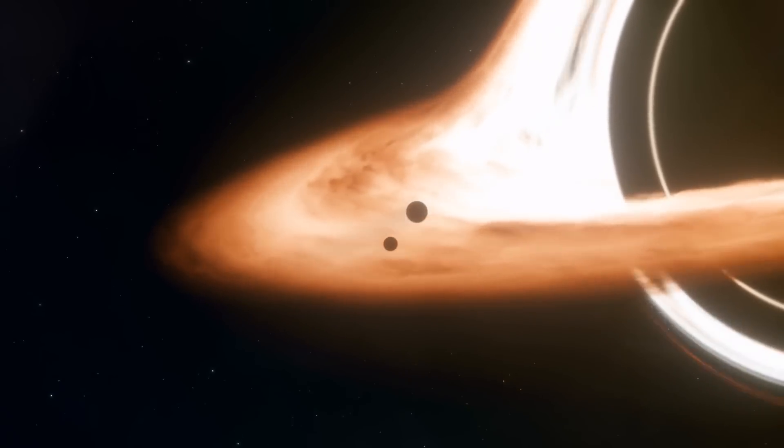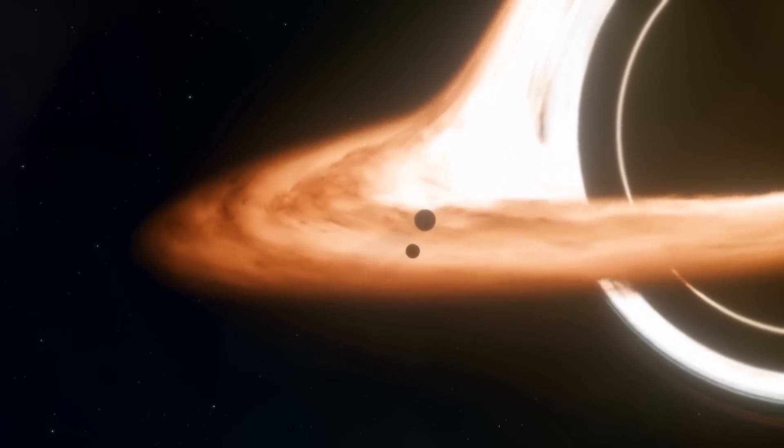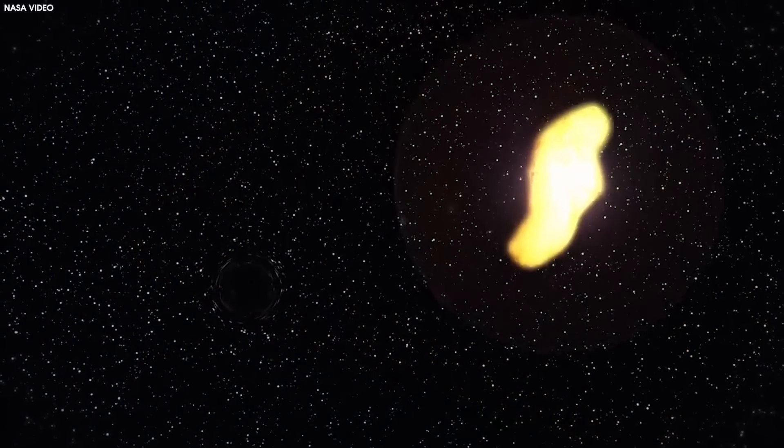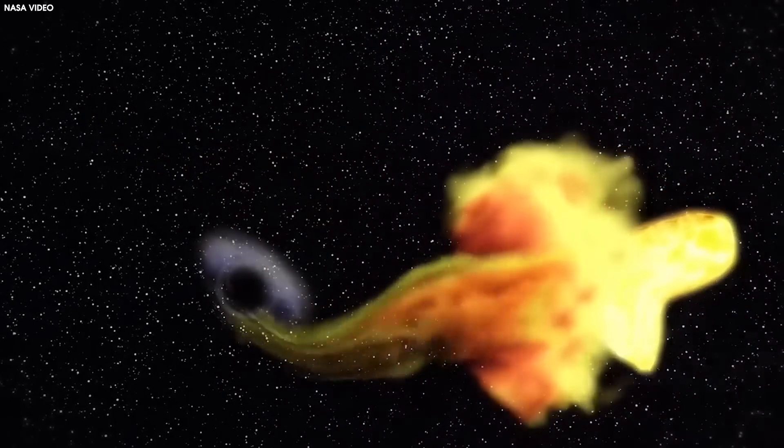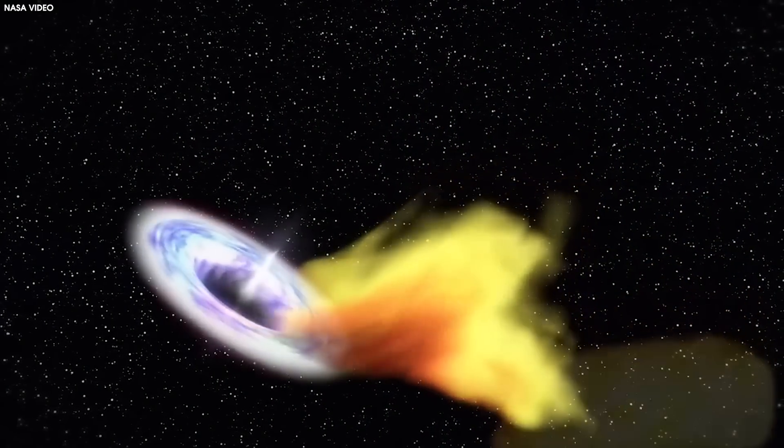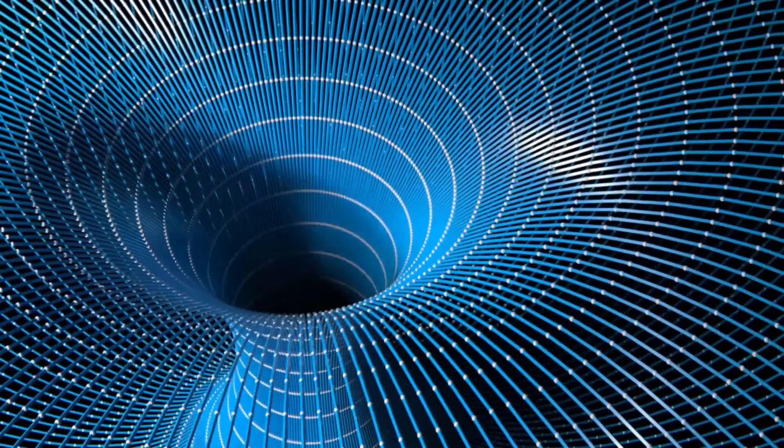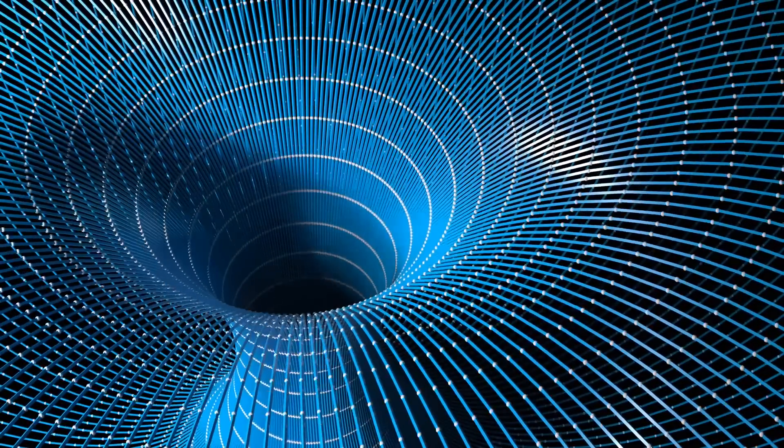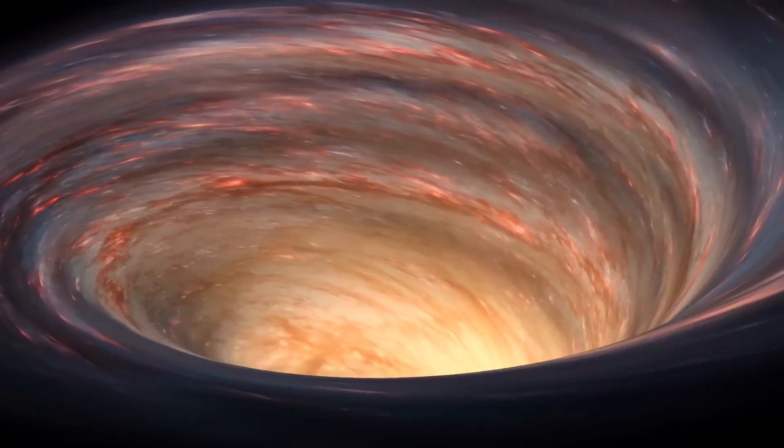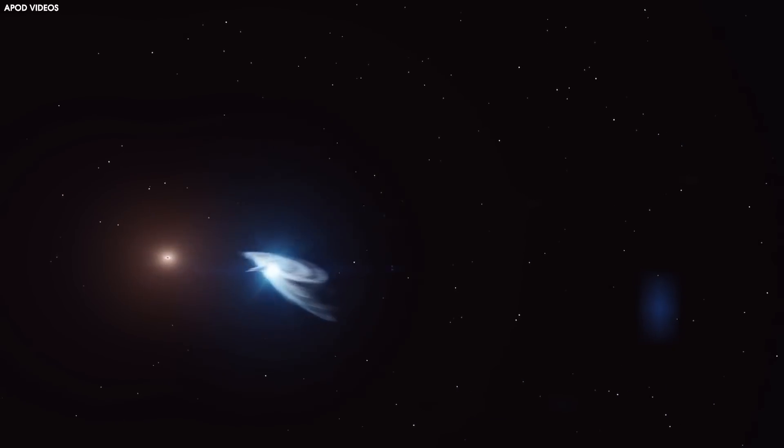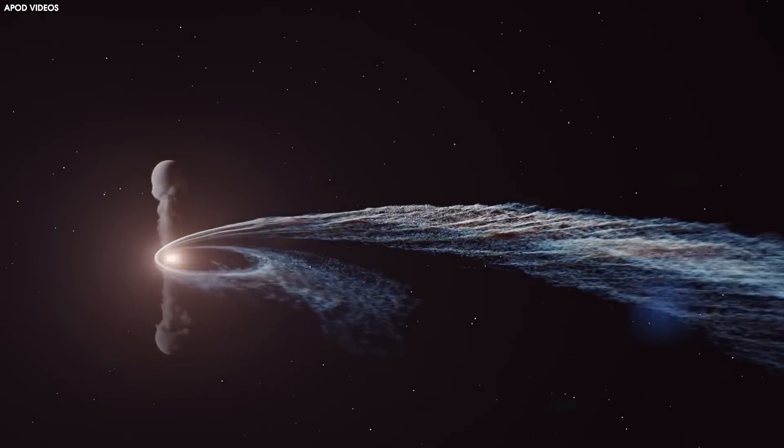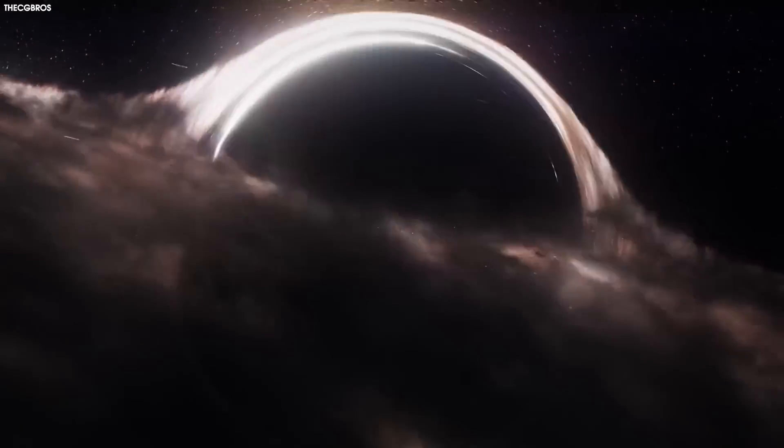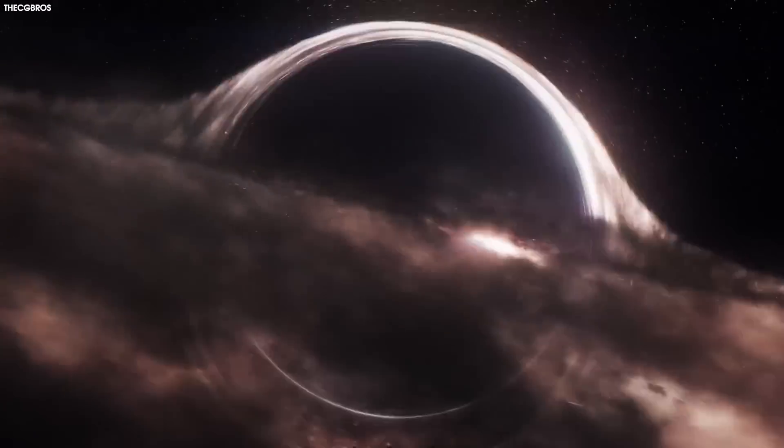Once an object crosses over to the other side of the event horizon, however, it's immediately doomed to be subsumed into the black hole's central singularity. Because the fabric of space-time is severely curved inside a black hole, an infalling object will reach the singularity within seconds of crossing the event horizon, growing the black hole's mass in the process.